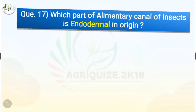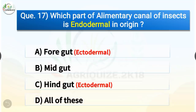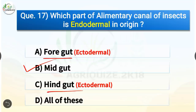Question number 17. Which part of the alimentary canal of insects is endodermal in origin? The options are foregut, midgut, hindgut, or all of these. The correct answer is option B, midgut. The midgut is endodermal in origin, whereas the foregut and hindgut are ectodermal in origin.